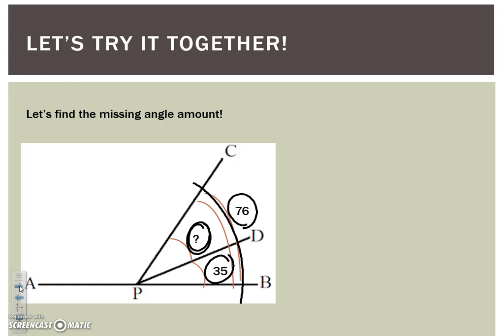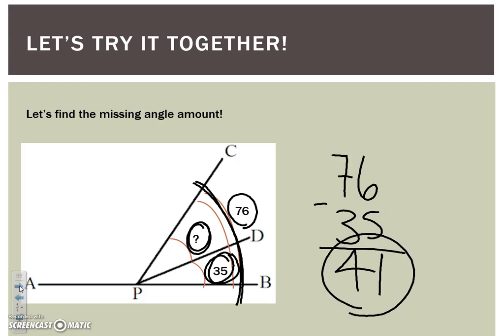Again, we're going to subtract. We take our total amount, which is 76. The problem tells us that. We also know that part of that angle measurement is 35, so we subtract. And when we subtract 35 from 76, we are left with 41 degrees for our missing angle measurement.